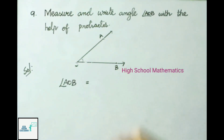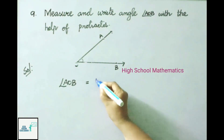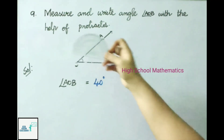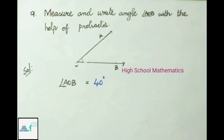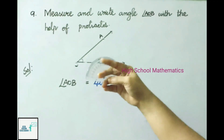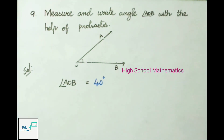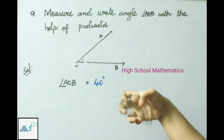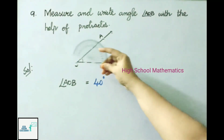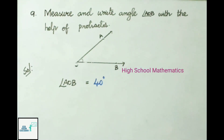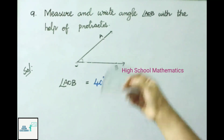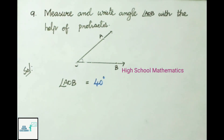When we place the protractor on the left side, we take the right-side zero scale. When placed on the right side, we choose the left-side zero scale. Here, the base line coincides with OB, and since the protractor is on the left side, we use the right-side zero scale — OA coincides with 40 degrees. So angle AOB equals 40 degrees.